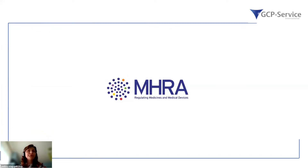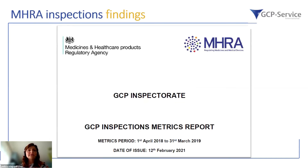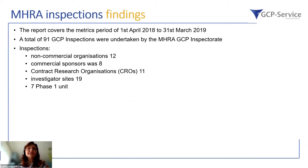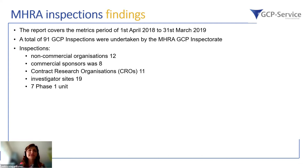Moving on to MHRA, the UK regulatory agency quite routinely shares a GCP inspection metrics report. The last available version covers the metrics period from April 2018 to March 2019 and was issued in February 2021. This report summarized 91 GCP inspections performed by the MHRA GCP inspection team, where 12 were at non-commercial organizations, 8 at commercial sponsors, 11 at CROs, 19 at investigational sites, and 7 at phase one units.